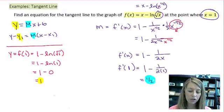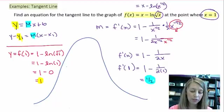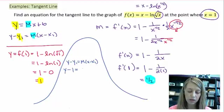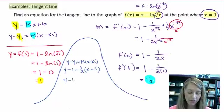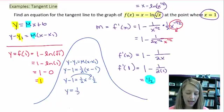Now it's just simple algebra to find the equation of this line. I'm going to use y minus y1 equals m times x minus x1, plugging in the appropriate values. My y value is 1, my slope value is 1/2, and my given x value is 1. Distributing the 1/2 gives 1/2 x minus 1/2. Solving for y by moving the 1 over gives y equals 1/2 x plus 1/2.